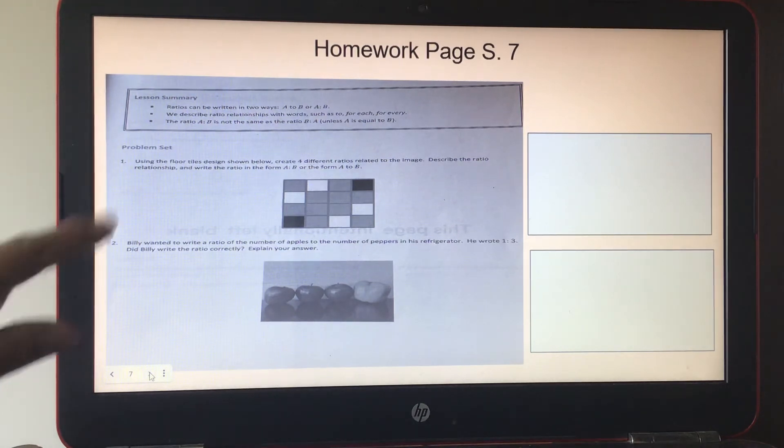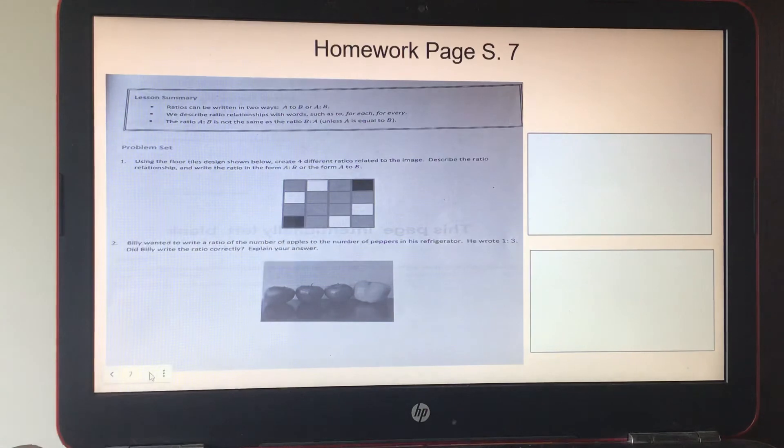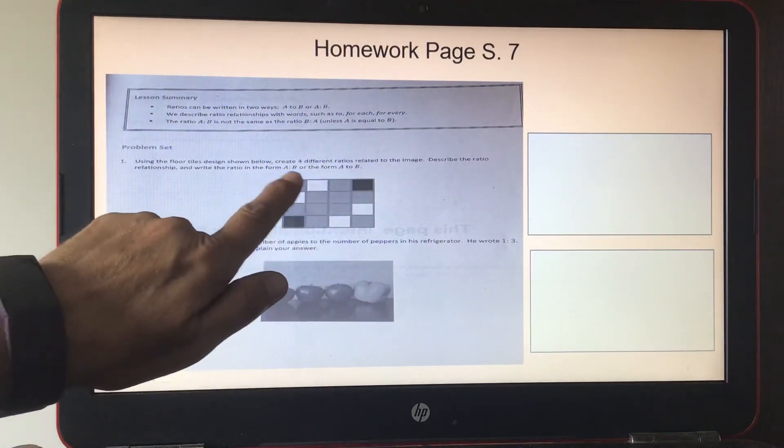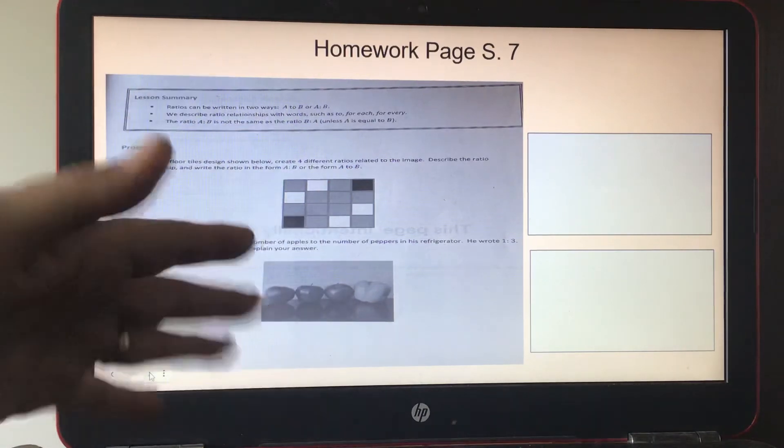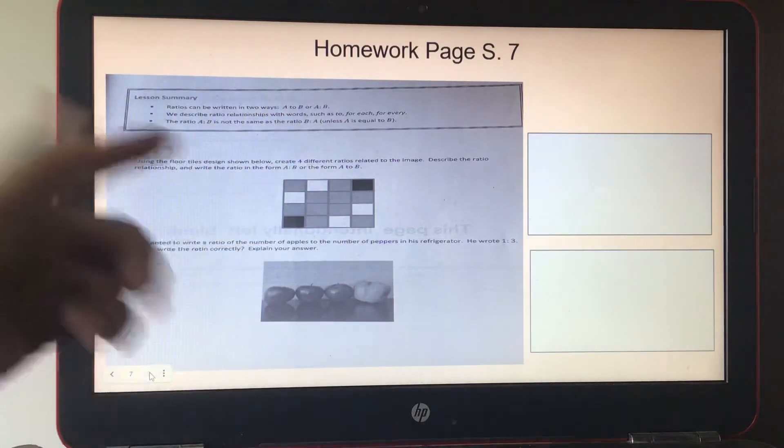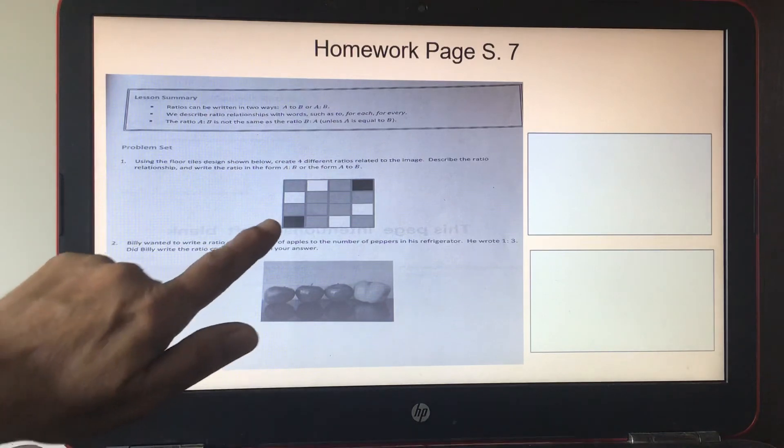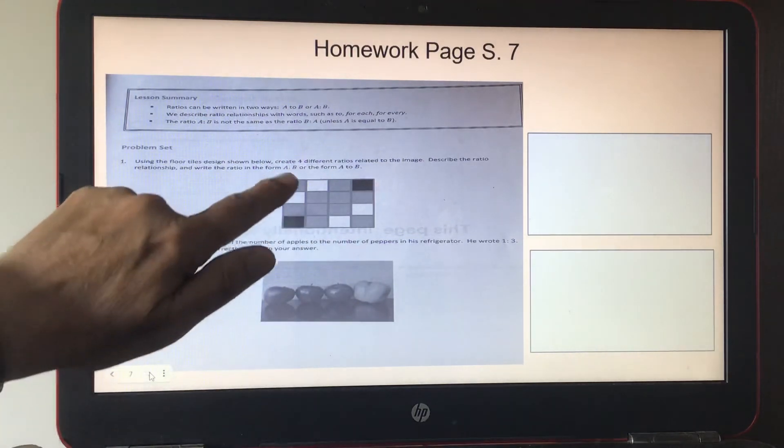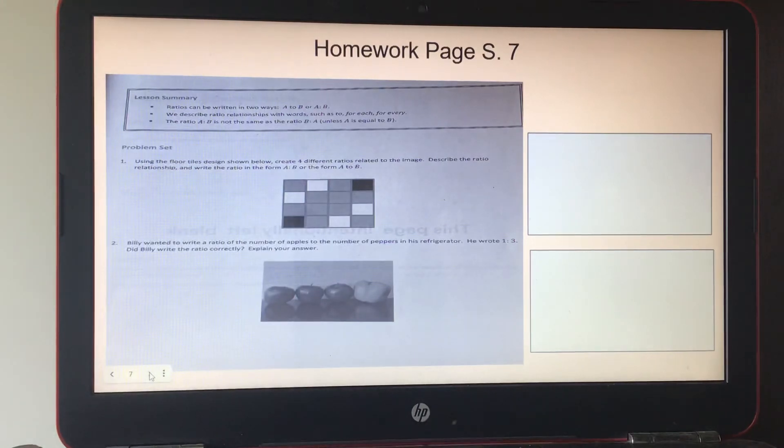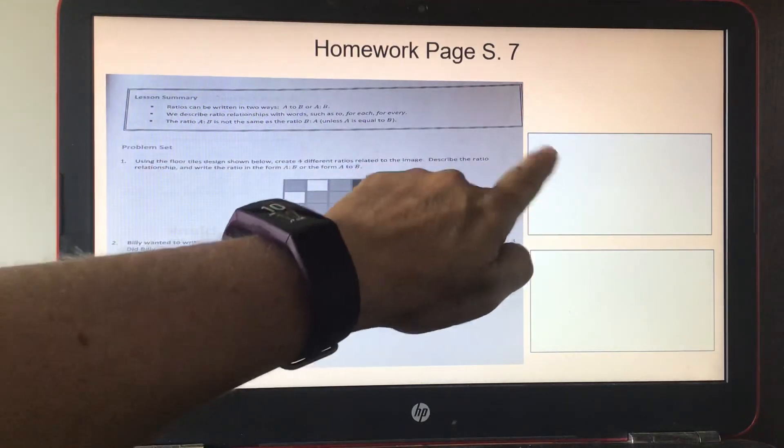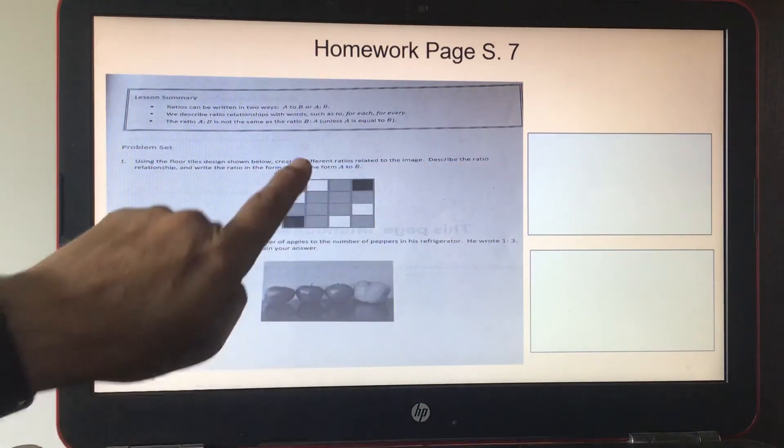Number one says using the floor tiles designed below, create four different ratios related to the image. Describe the ratio relationship and write the ratio in the form A to B or A colon B. I'll give you an example to start you off. Two black tiles to four white tiles, two to four. Go ahead and fill the rest of those out.